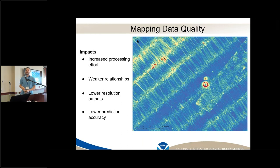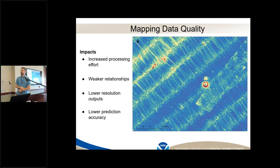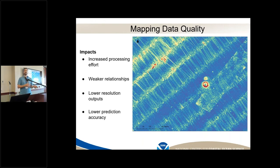Admiral Evans asked earlier what sorts of lessons we learned from modeling that could be useful for a hydrographer. One of them — and this probably everyone knows intuitively — is that poor data quality is going to give you a poor predictive model. There are many different types of artifacts that exist in hydrographic data that are hard for any predictive model to distinguish from reality. Artifacts create more time and effort for people to process the data and create weaker relationships between the variables of interest and the remote sensing layers.